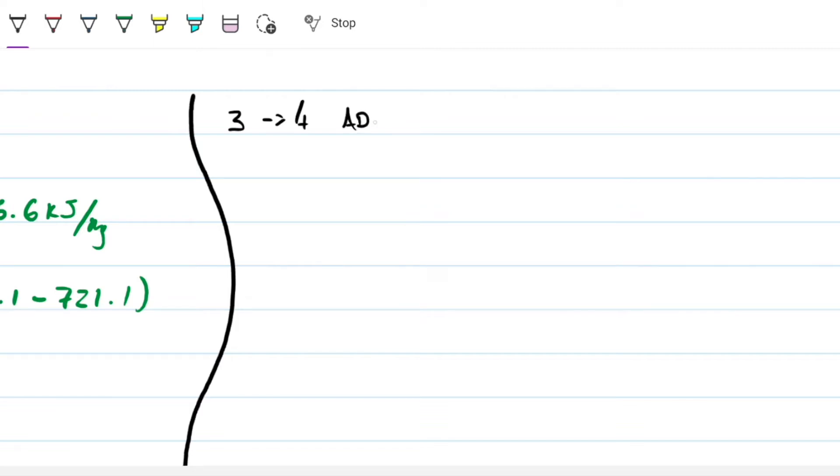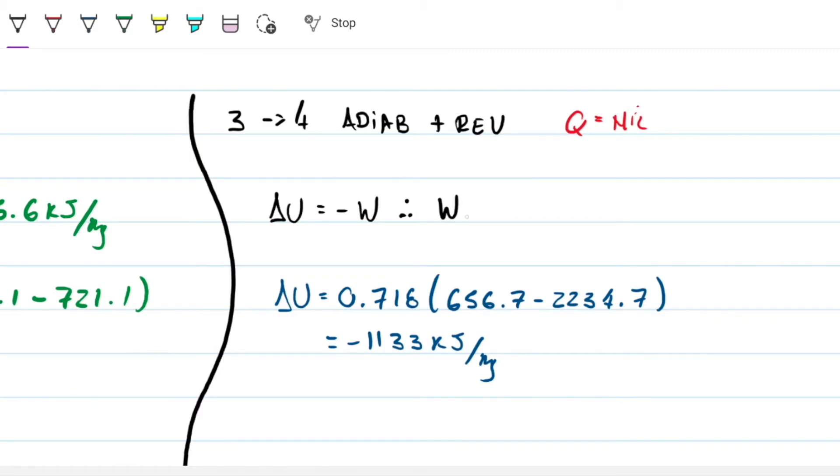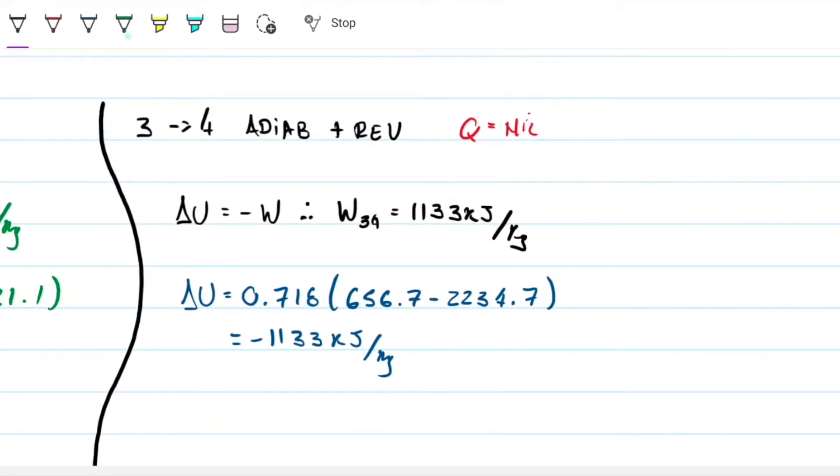So from 3 to 4, we have something very similar to the one before. We have an adiabatic reversible. So once again, we don't have any heat. So that means that my delta U equals that, and we can do delta U the same way. So CV delta T, and my CV is 0.718, my delta T is 656.7 minus 2234.7. So my delta U is negative 1,133.2. So note that now we have a negative number because we have a negative number over here. So then obviously that means that my delta U has decreased. And if my delta U has decreased, then that energy was used by someone and that someone was work. So that means that work from 3 to 4 is positive 1,133.2. We knew that from the start because we know it is an expansion.